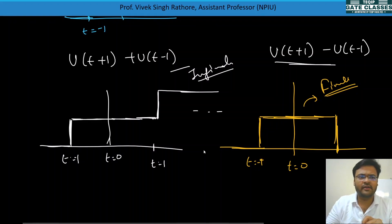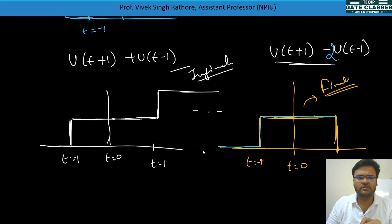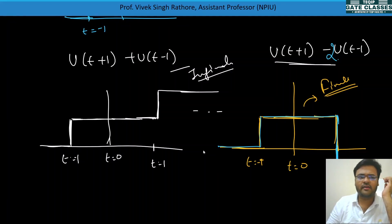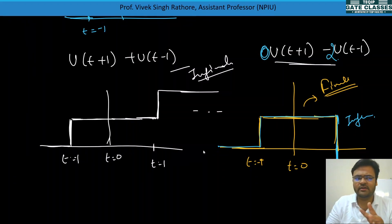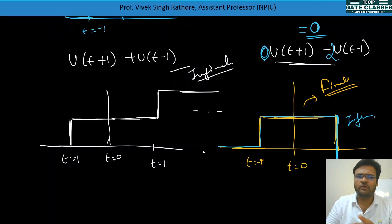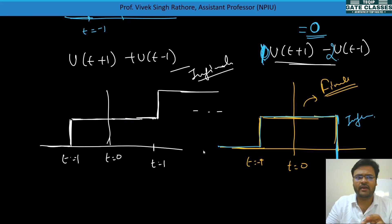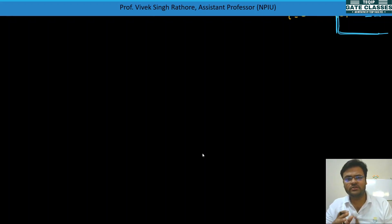For a finite duration signal, the sum of all step amplitudes must equal zero. For example, +1 and −1 sum to 0, giving a finite-duration signal. But if the amplitudes don't cancel — such as 1 − 2 = −1 — the signal becomes infinite in duration.